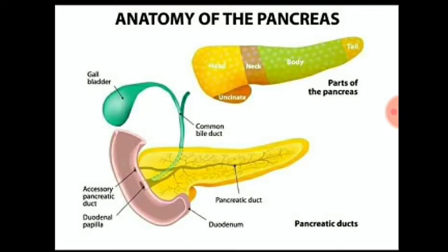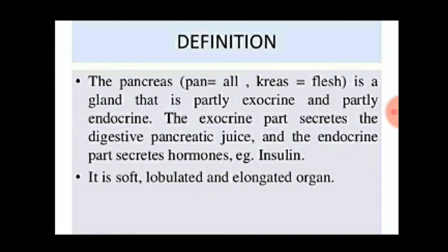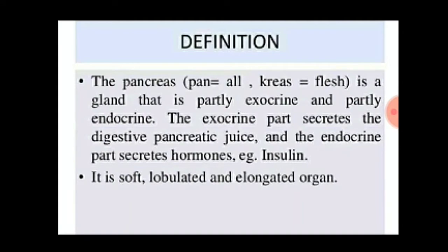This is the anatomy of the pancreas, which contains five parts: uncinate, head, neck, body, and tail. The uncinate means hooked shape. The pancreas is a gland that is partially exocrine and partially endocrine. The exocrine part secretes digestive pancreatic juice, and the endocrine part secretes hormones such as insulin. It is a soft, lobulated, and elongated organ.